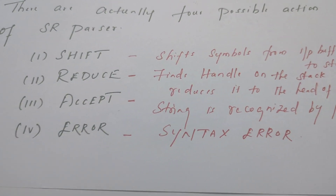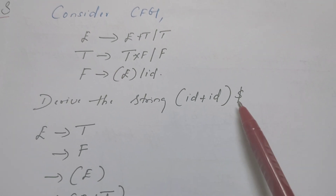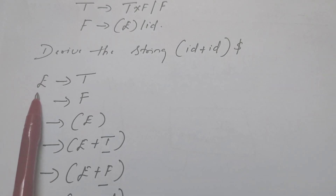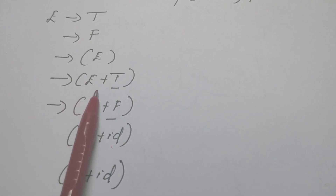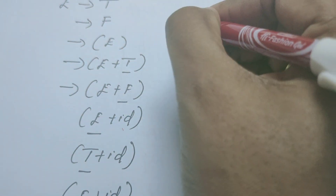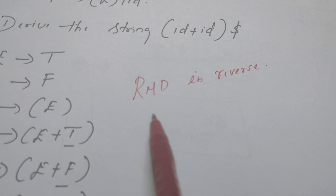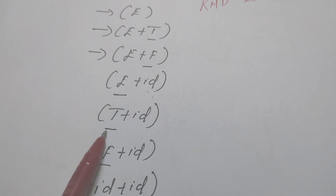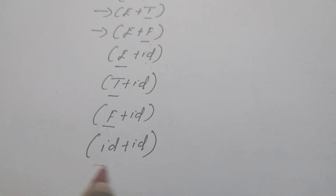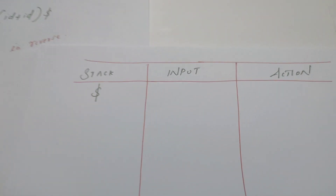Let us understand these four actions with an example using the expression grammar. The string is (ID + ID)$. E is the start symbol. The derivation proceeds: E → T → F → (E) → (E+T), then the rightmost variable is chosen each time — because bottom-up parsing is rightmost derivation in reverse. T → F → ID, and eventually we obtain the expected string (ID + ID).